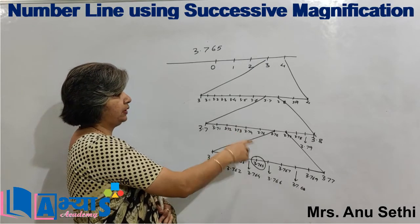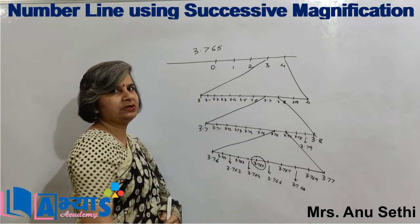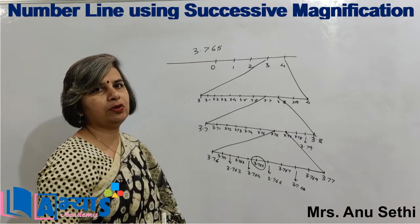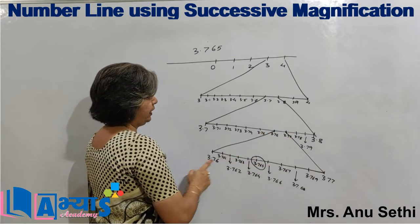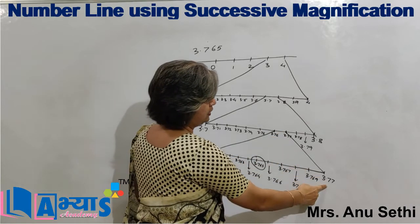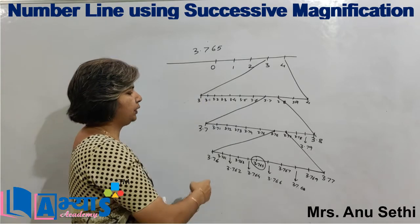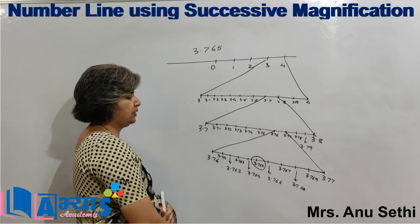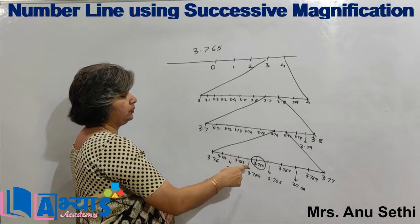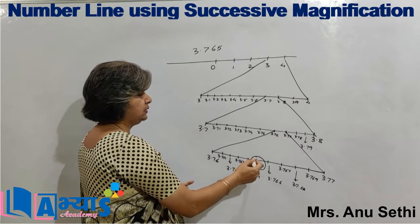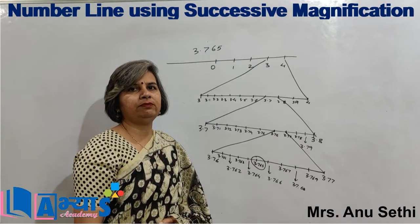I plotted 3.71, 3.72 and so on, and found that 3.765 is greater than 3.76 but less than 3.77, so it lies somewhere between those two points. I magnified this region: 3.76 on one side and 3.77 on the other, made 10 divisions — 3.761, 3.762, 3.763, 3.764, 3.765 and so on. So I found that 3.765 lies on the number line at that point. This is how we perform successive magnification.